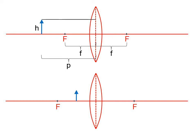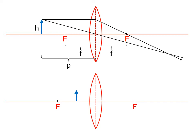Rule number one says go parallel to the principal axis and then the light is going to be refracted through the focal point. We know that actually the light bends at the boundary, so in reality it would bend right here and again right there. But we're going to simplify things by bending the light only once at the center line of the lens. Rule number three says line up the top of the object with the center of the lens and just keep right on going.